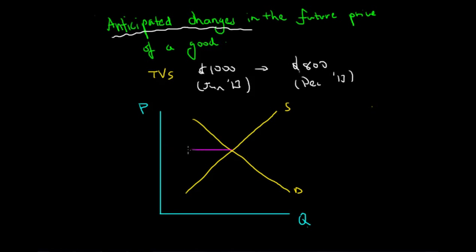Using the same demand and supply analysis, we have price initially at P1, which is also $1,000, and the quantity traded at Q1, with equilibrium at E1. Demanders are happy, suppliers are happy, the market is clear and we are at equilibrium.